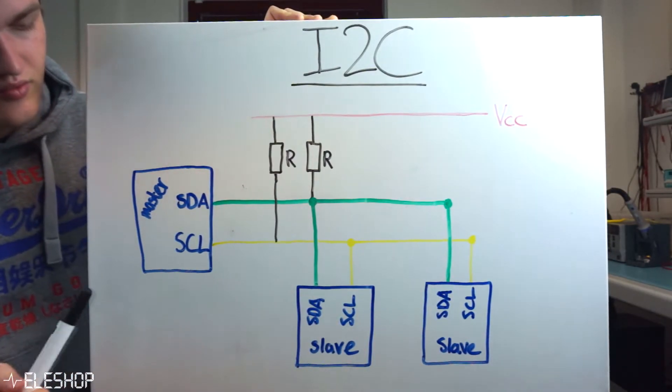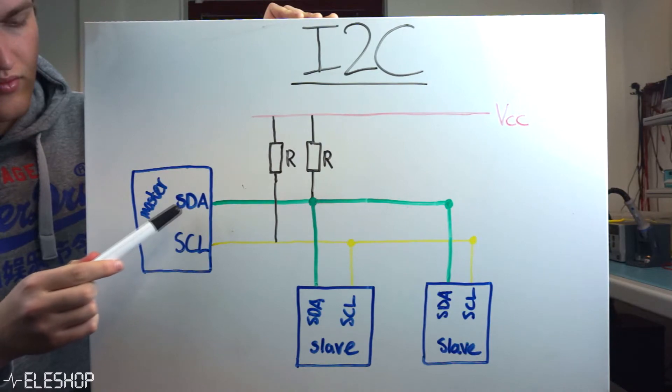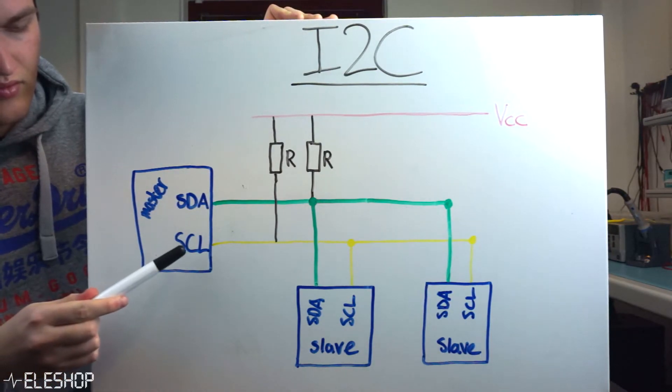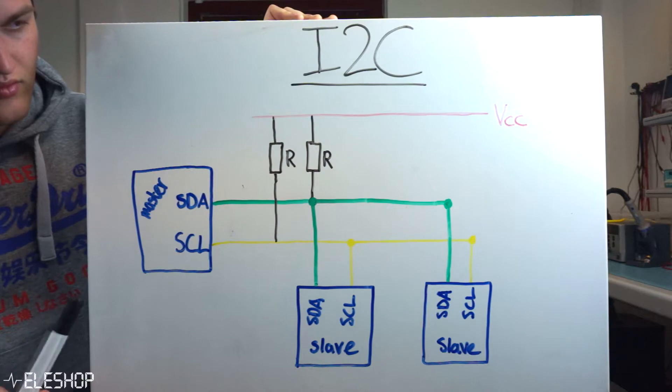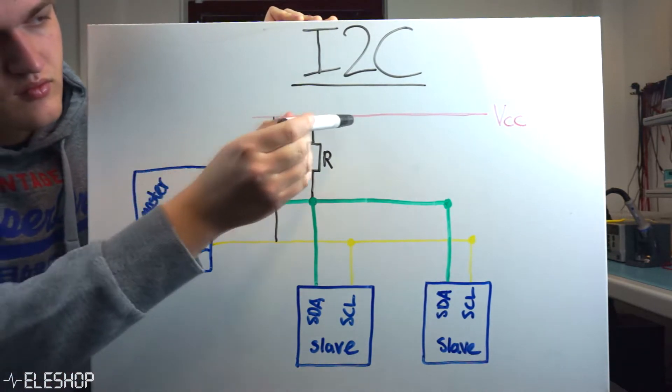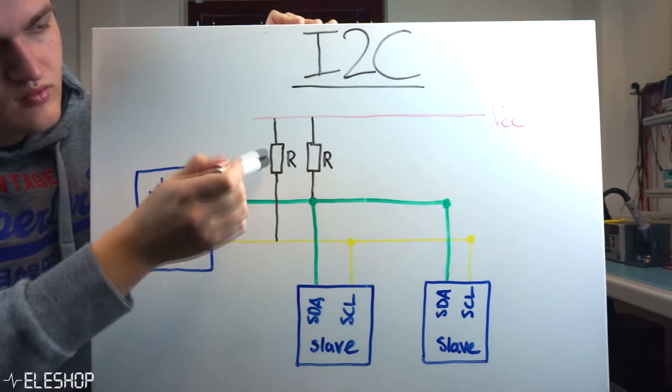The two lines are SDA, which is the serial data line, and SCL, which is the serial clock line. Both lines need to be connected to a positive voltage supply with a pull-up resistor.